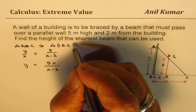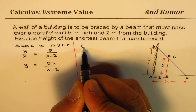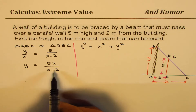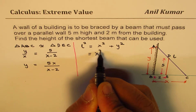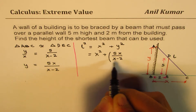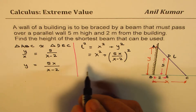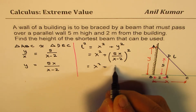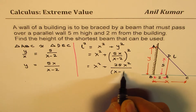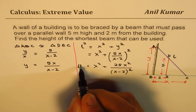We can write L using the Pythagorean theorem: L² equals X² plus Y². Since we know Y in terms of X, we replace Y with 5X over (X minus 2), giving L² equals X² plus 25X² over (X minus 2)². We now have length as a function of X.